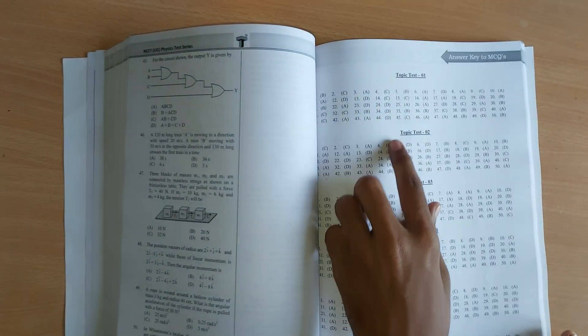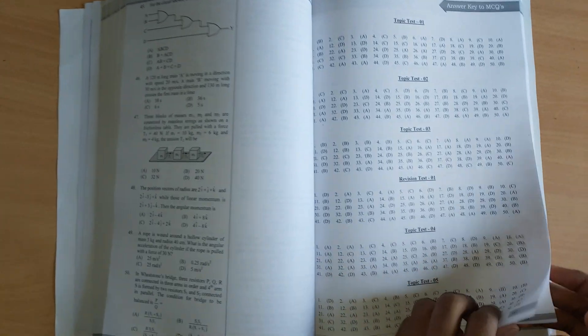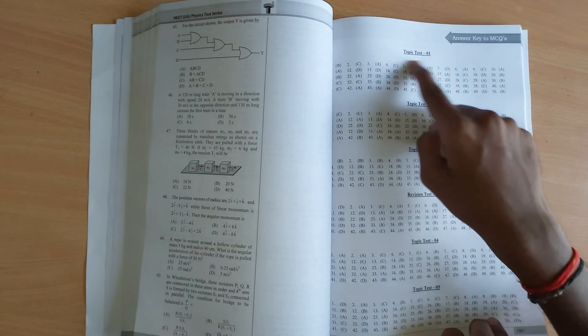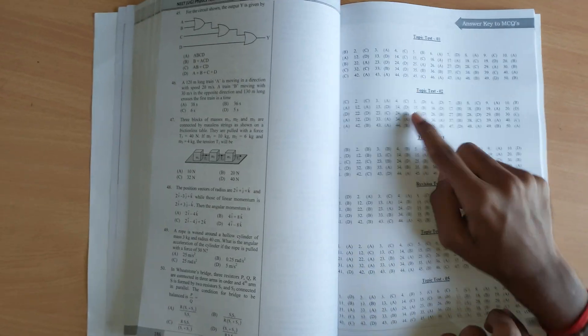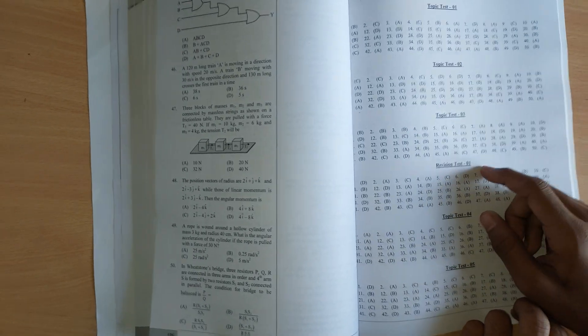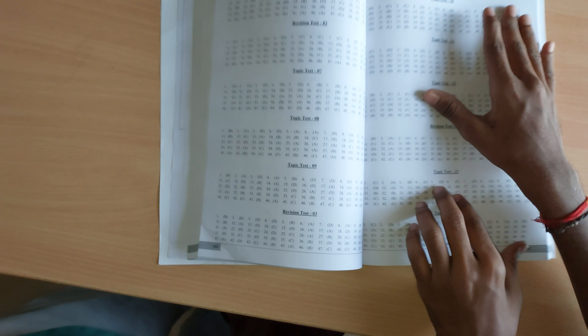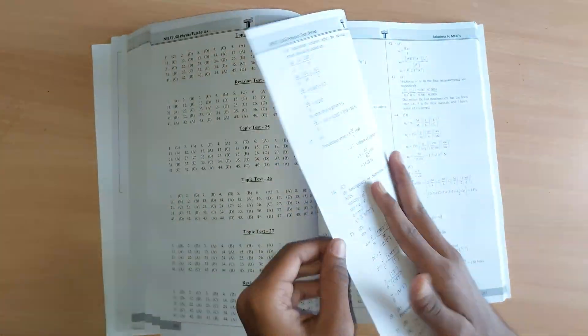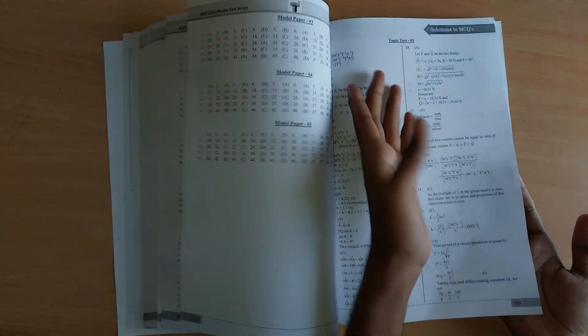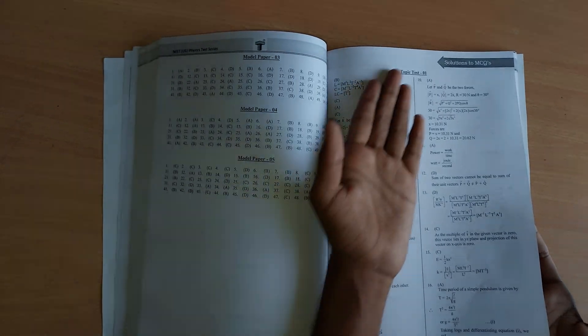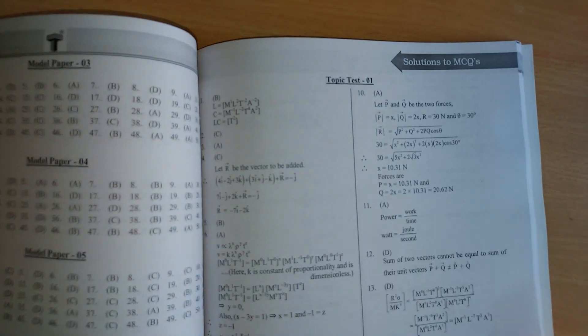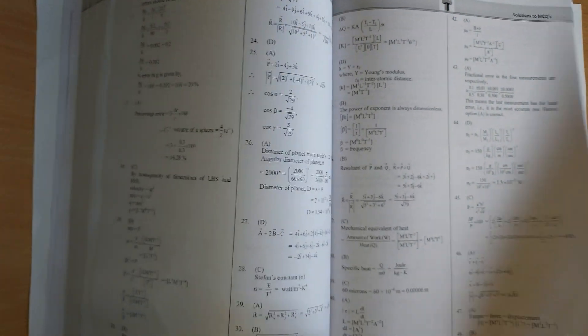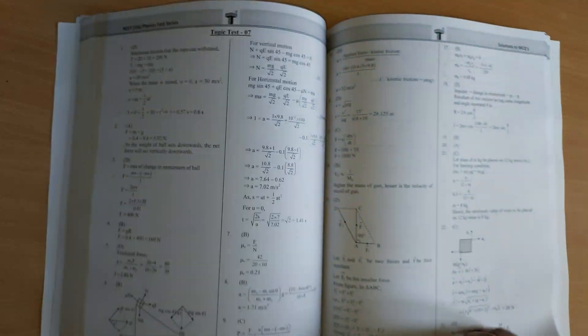Here are the answers which are given in the book. These are the key solutions for topic test one, topic test two, and so on. These are the keys and these are all the explanations. We have also model paper explanations.